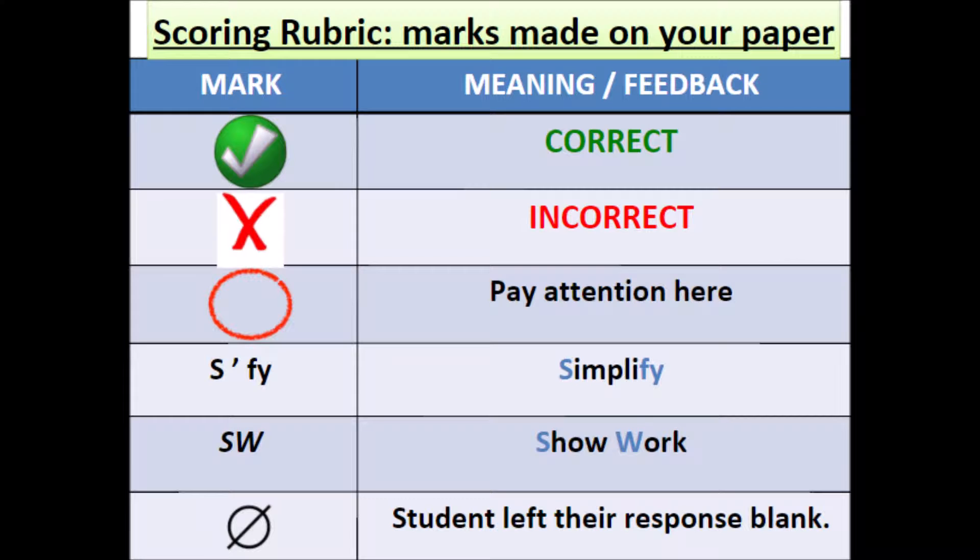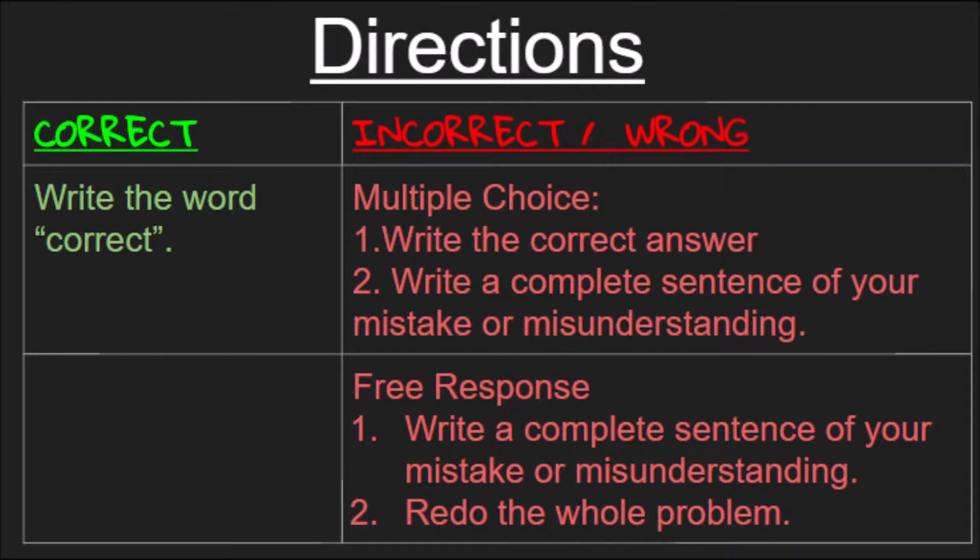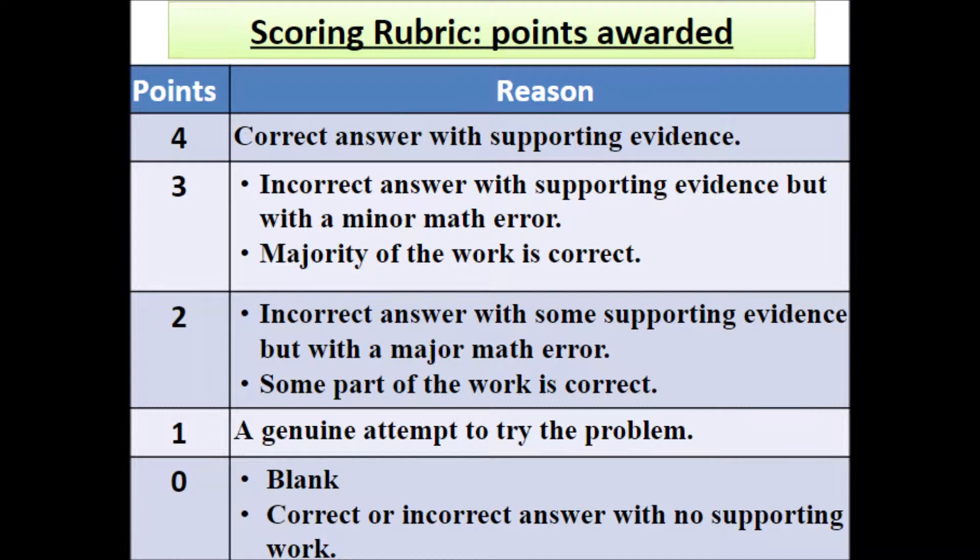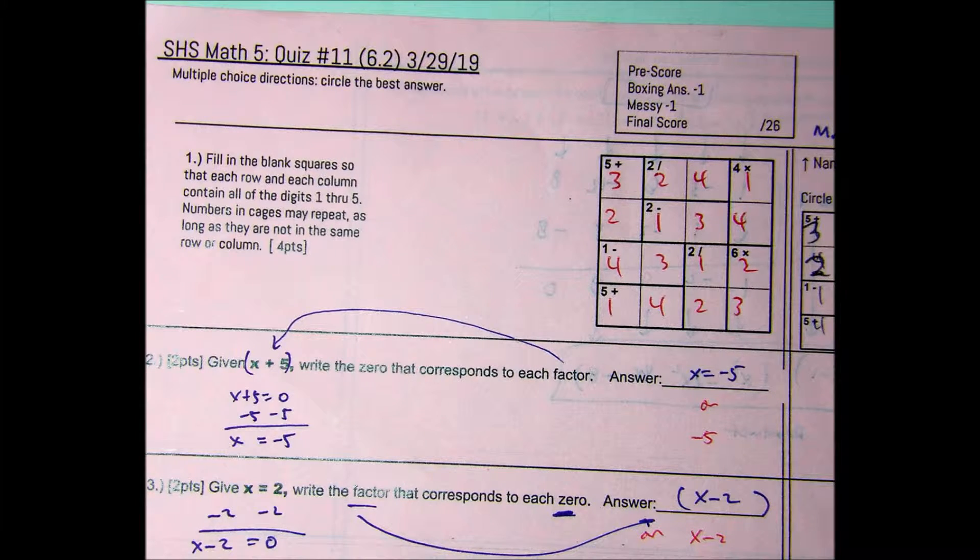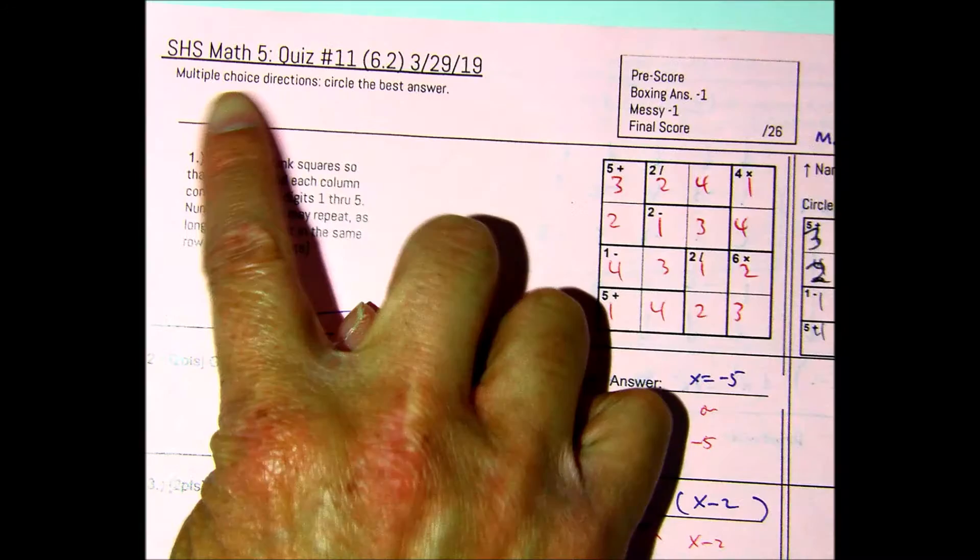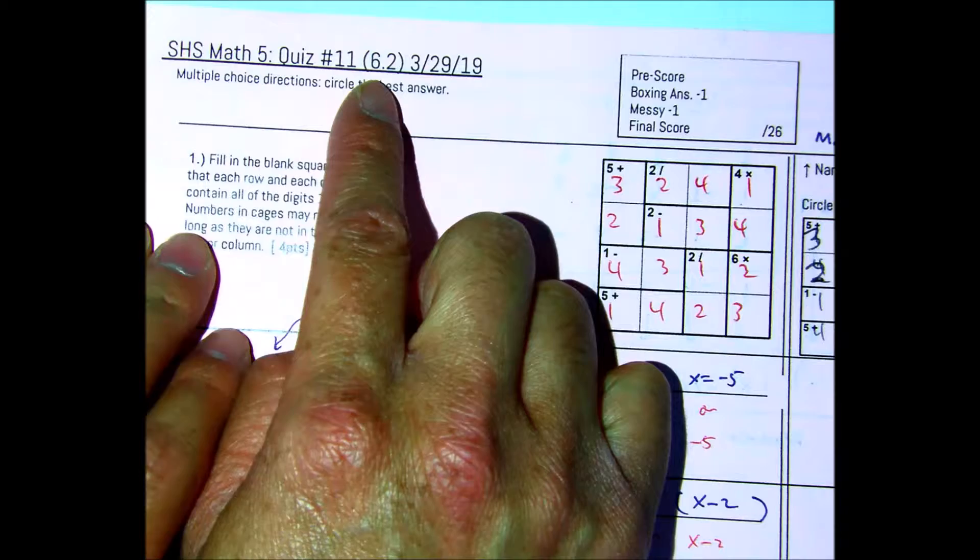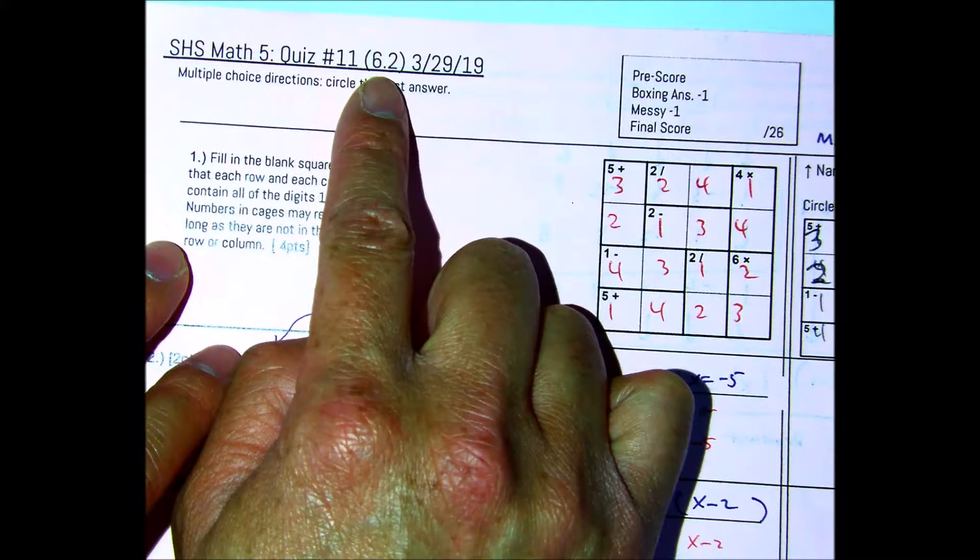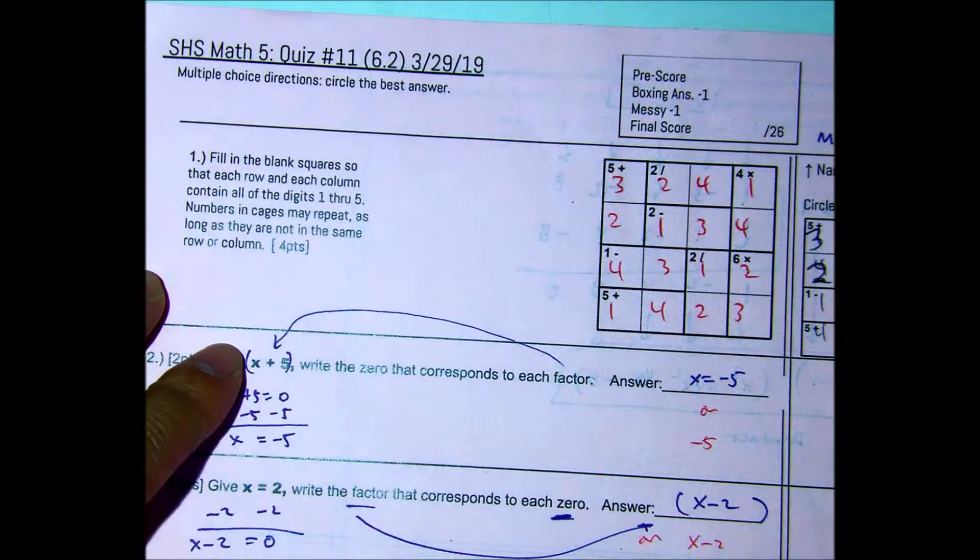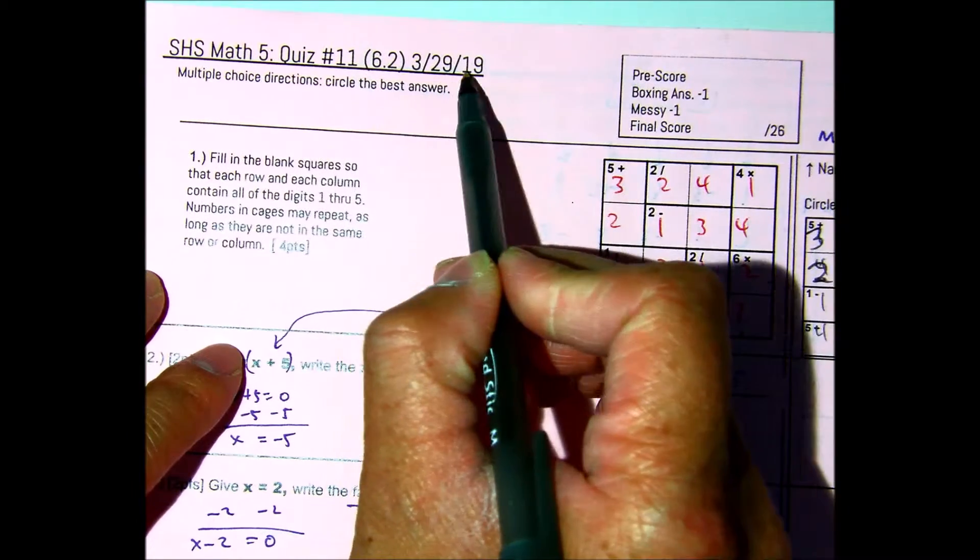I love math. You don't love math? What's wrong with you? I love math. Alright, so let's go over the quiz corrections for Math 5, quiz number 11. This was on 6.2. It's essentially synthetic division, long division, and a little bit of the factor theorem. This is taken March 29, 2019.